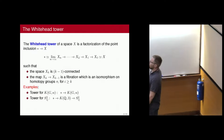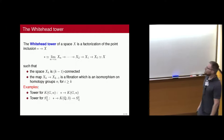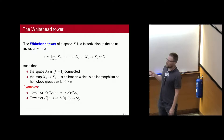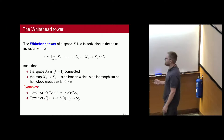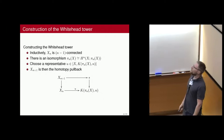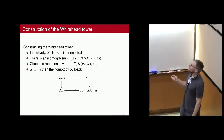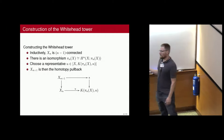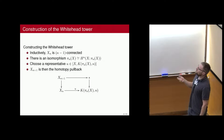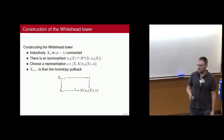You can also look at the tower over the rational two-sphere. It has non-trivial rational cohomology in degrees two and three. At the bottom you have the two-sphere, then you kill the second homotopy group and you're left with just an Eilenberg-MacLane space in degree three. To construct this inductively: at the n-th step, you've got an (n-1)-connected space. Hurewicz gives you an isomorphism between the n-th homotopy group and n-th cohomology group. You choose a representative using Brown representability theory, and define the next space as the homotopy fiber of this map.